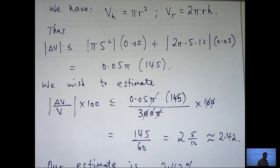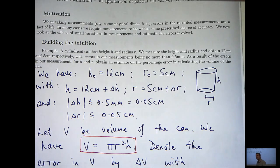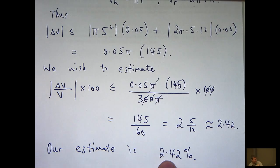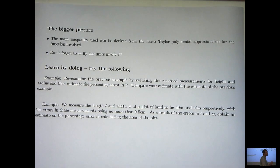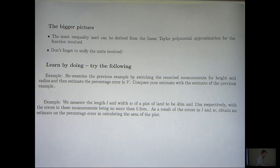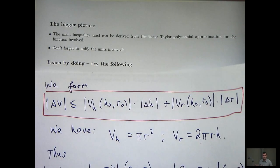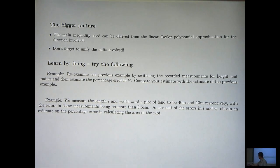Let's review. Based on our measurements, we can expect an estimate or worst case scenario. In calculating the volume of the can, the worst amount we're going to be off is about 2.42%. Is this acceptable? Is this not? Well, we're not told. But let's look at the bigger picture. Let's look at some ideas that you can use when solving all kinds of problems like these. The main inequality, this one here, can be derived from linear Taylor polynomial approximation for the function involved. And I showed you how to do that. When you're working with these problems, don't forget to unify the units involved.